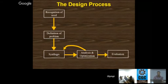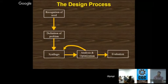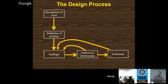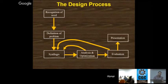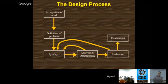Fifth is evaluation — the presentable form; after optimization, you evaluate the results shown to the vendor. If evaluation is not up to the mark, it goes back to synthesis. If synthesis is not proper, you will not get accurate results for optimization or evaluation. Sixth is presentation — after evaluation is okay, you present to the vendors. These are the six parameters of the design process: recognition of need, definition of problem, synthesis, analysis and optimization, evaluation, and presentation.